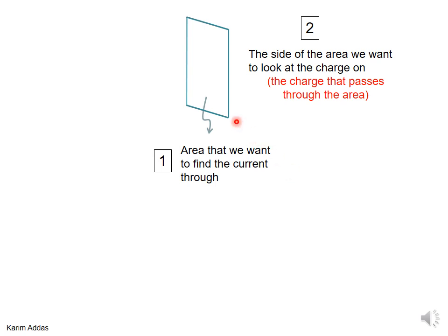You can solve everything two different ways: by looking at what happens on the right side, or on the left side — and those two ways will give different answers in terms of the sign of the current. There's a convention you have to choose. For an open surface, it's up to you which side you want to monitor the charge on. In these slides, we're going to choose the right side.